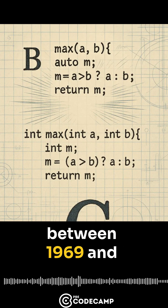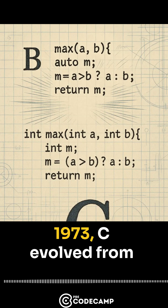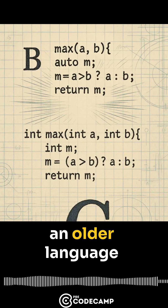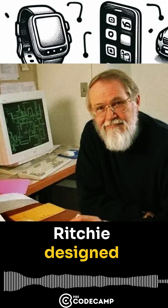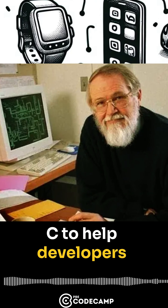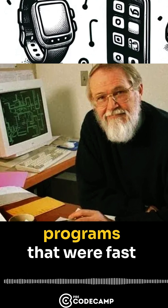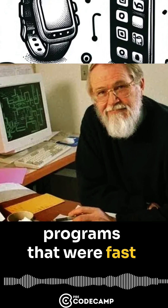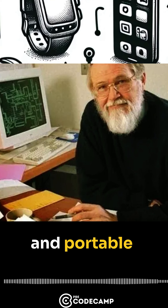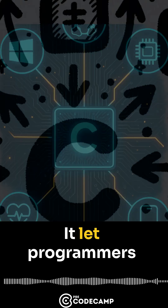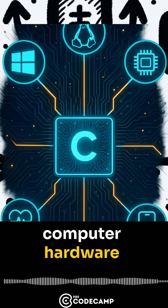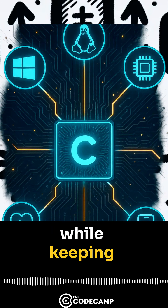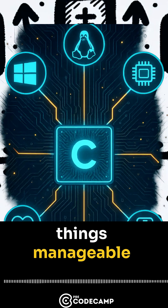Originally developed between 1969 and 1973, C evolved from an older language called B. Ritchie designed C to help developers write efficient programs that were fast and portable. It let programmers interact closely with computer hardware while keeping things manageable.